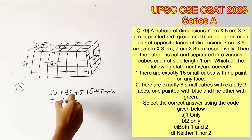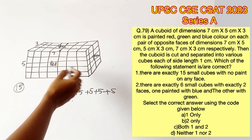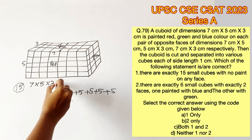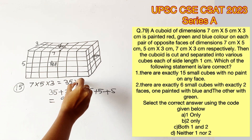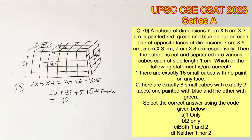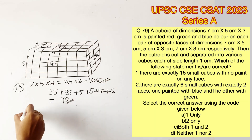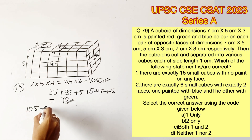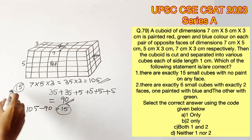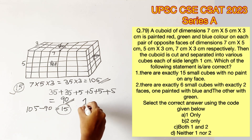So 35 plus 35 plus 5 plus 5 plus 5 plus 5 gives us 90 painted cubes. The volume of the cuboid is 7 by 5 by 3, which is 105. Since it is divided into one-centimeter cubes, there are 105 total cubes, of which 90 are painted. Therefore 105 minus 90 equals 15, and Statement 1 is true.